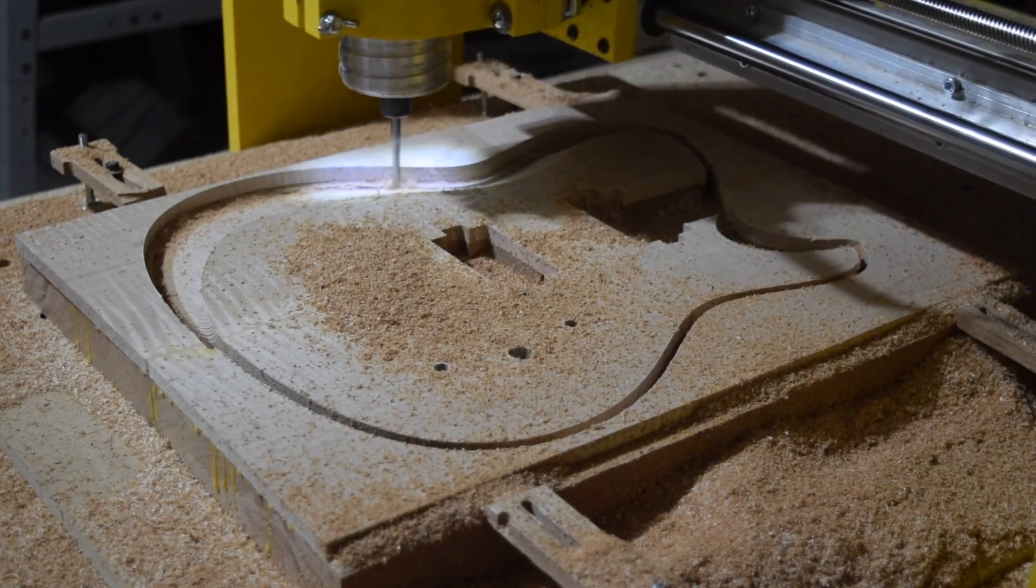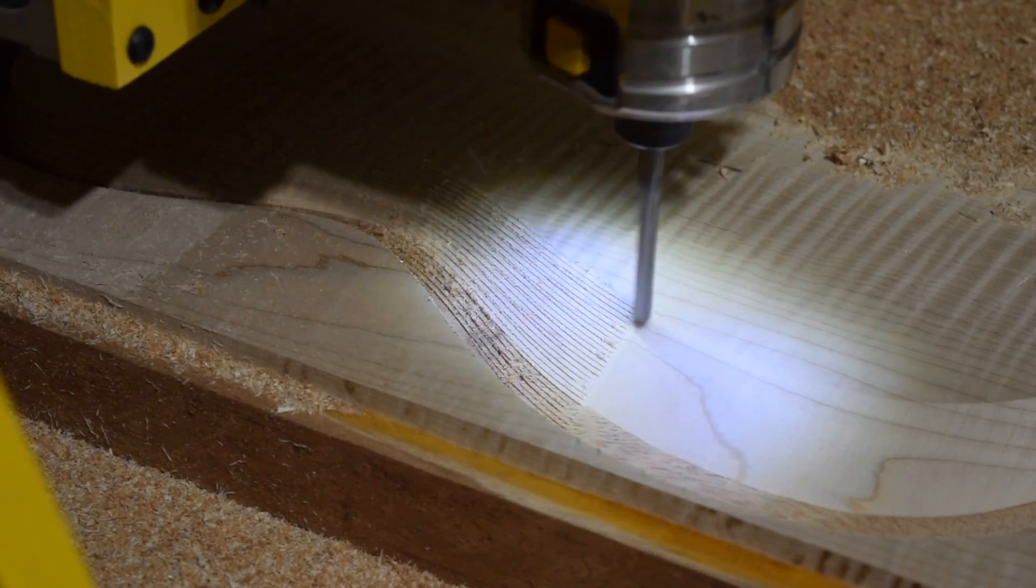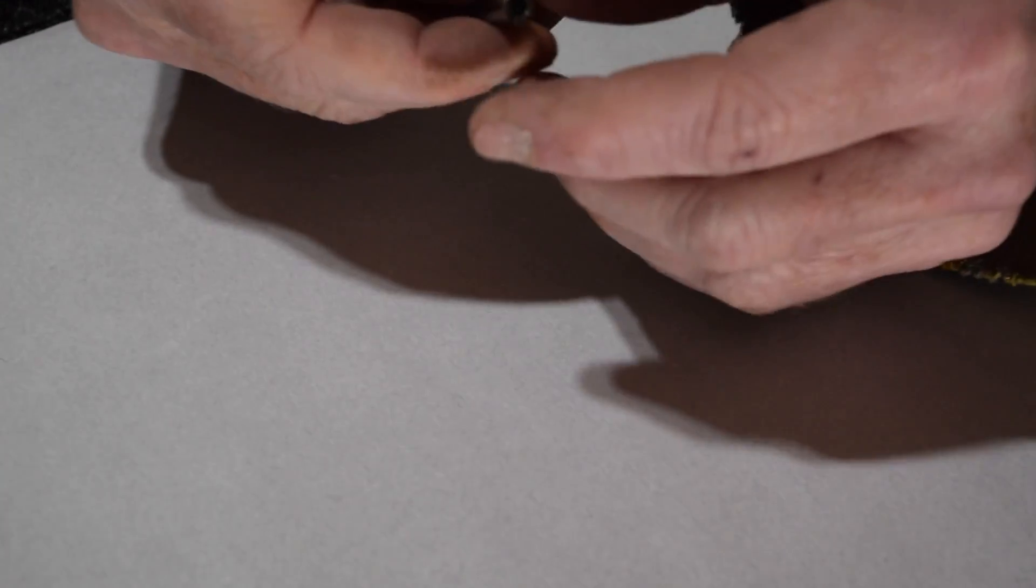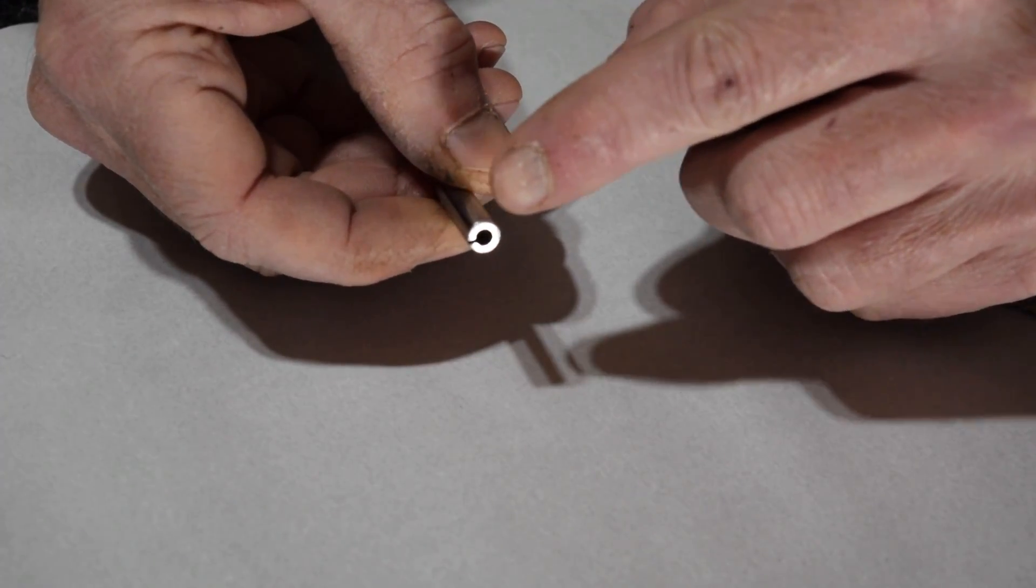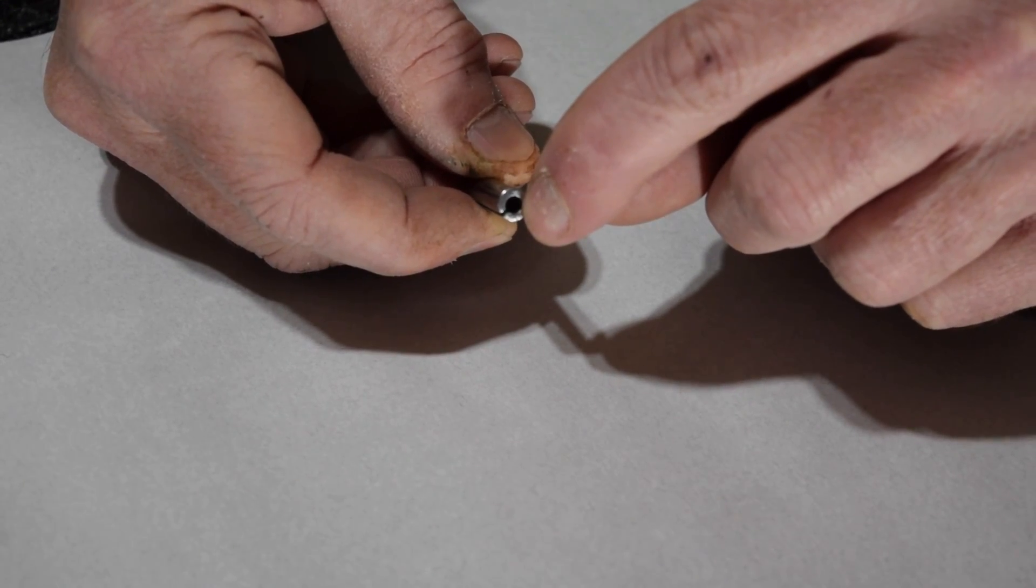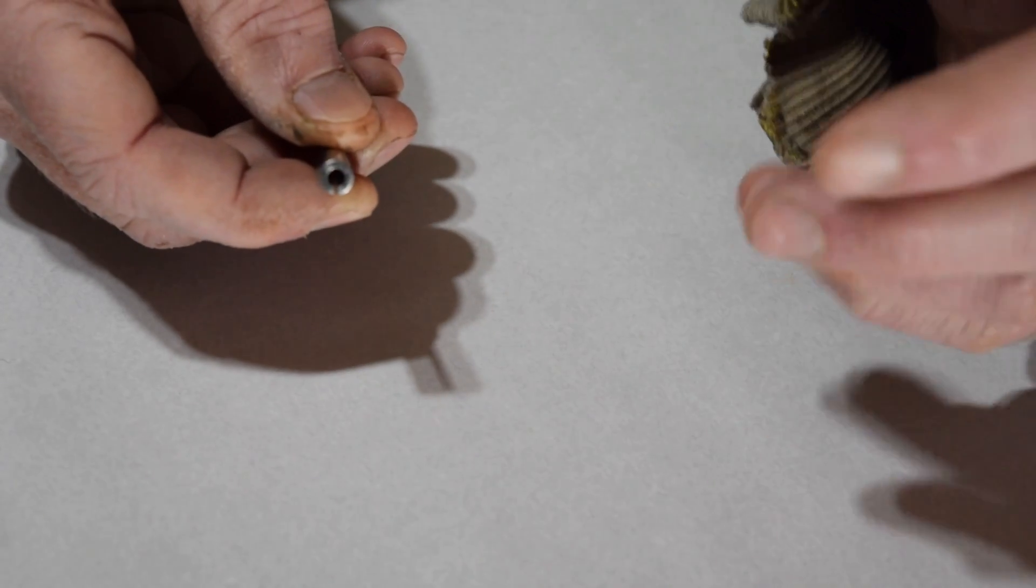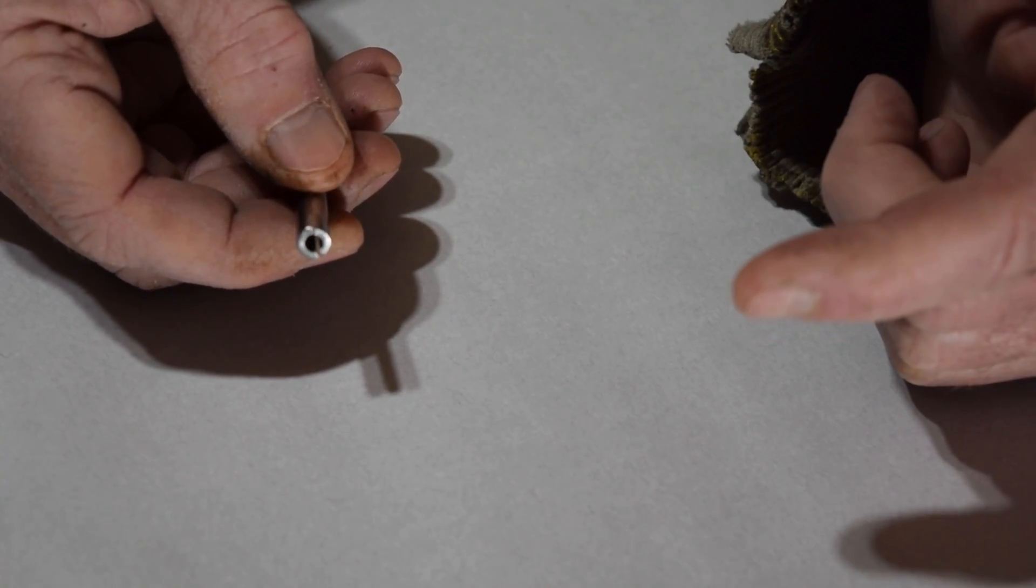Now there are a lot of bits that I use which have an eighth of an inch shank and to use those I have to use a simple adapter and this goes from a quarter inch outside diameter to an inner diameter of an eighth of an inch and that allows me to use the eighth inch shank bits with my CNC machine.